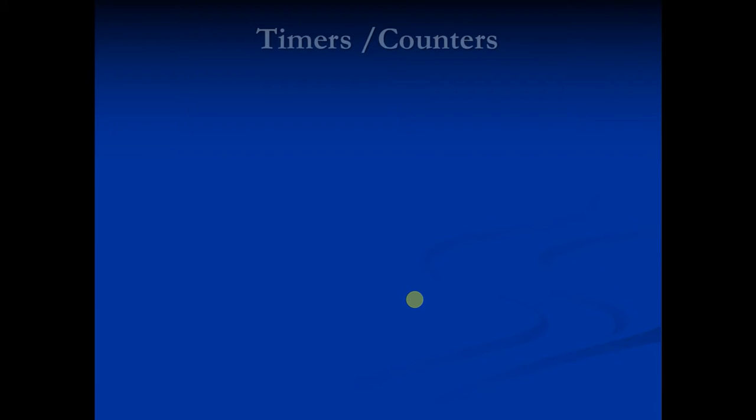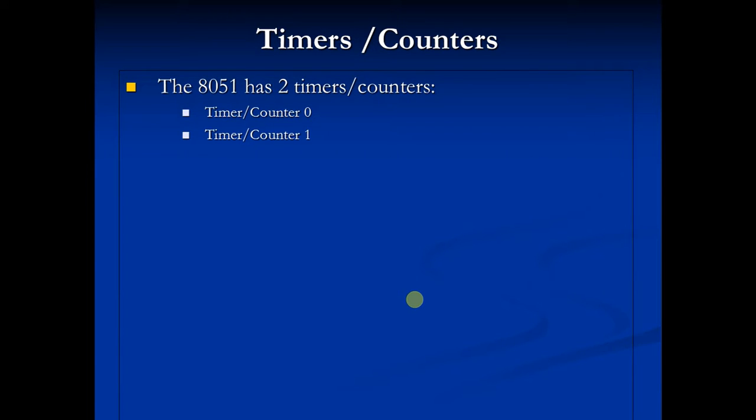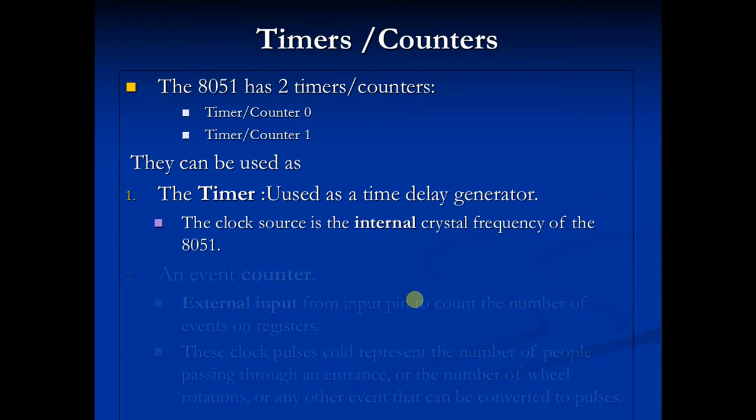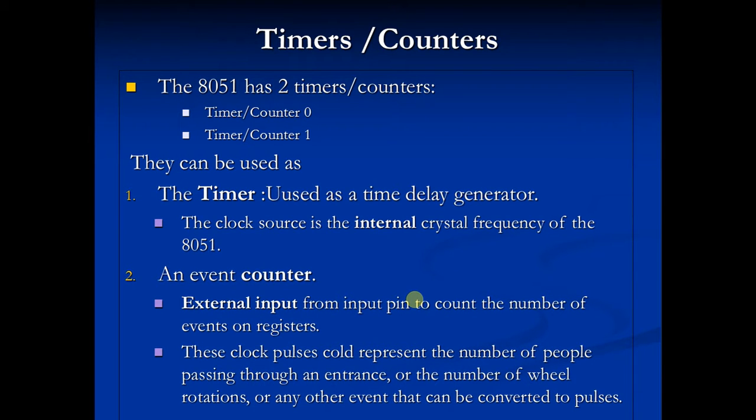Now the first group is timer and counter. The 8051 microcontroller has two 16-bit timer counter registers called Timer Counter 0 and Timer Counter 1. They can be used as timer as well as event counter.